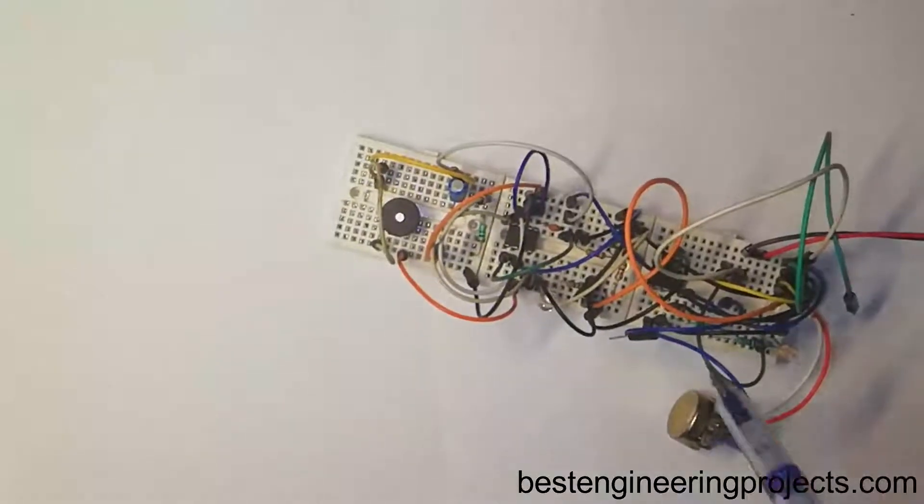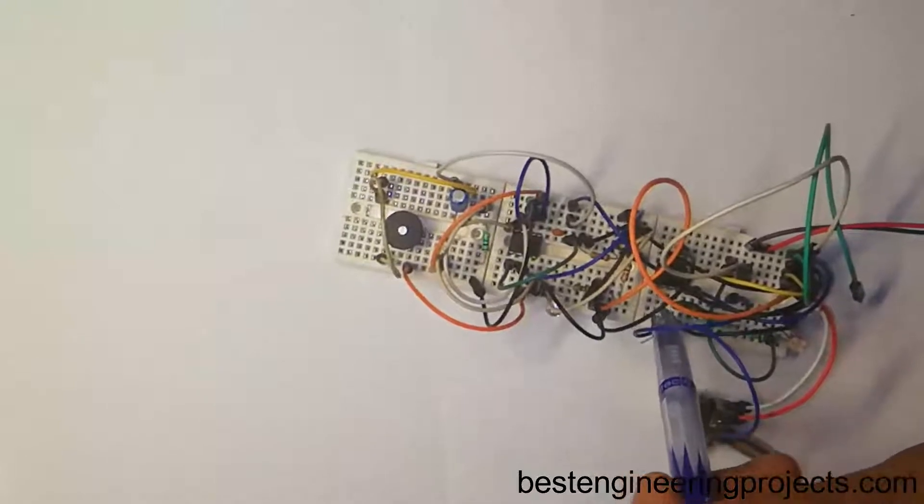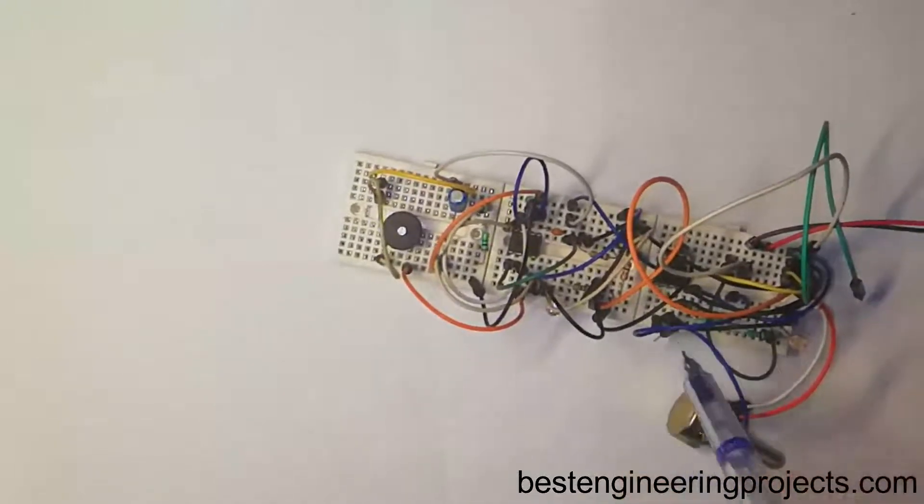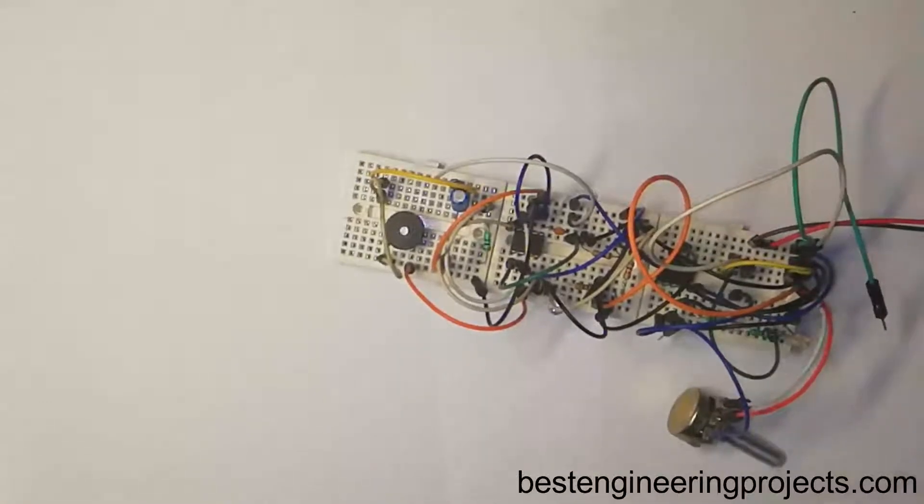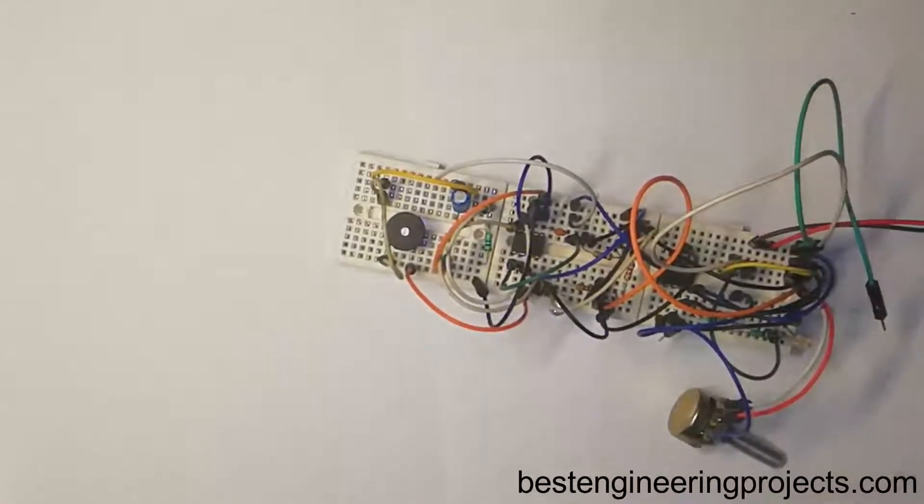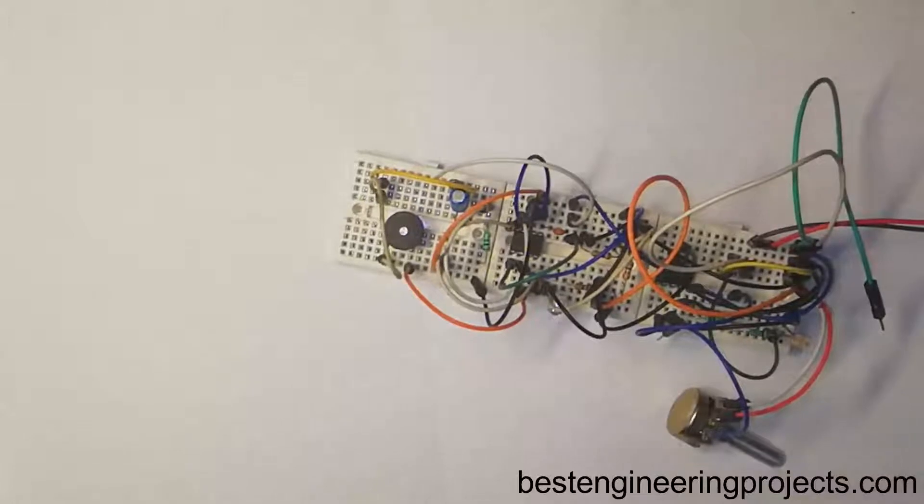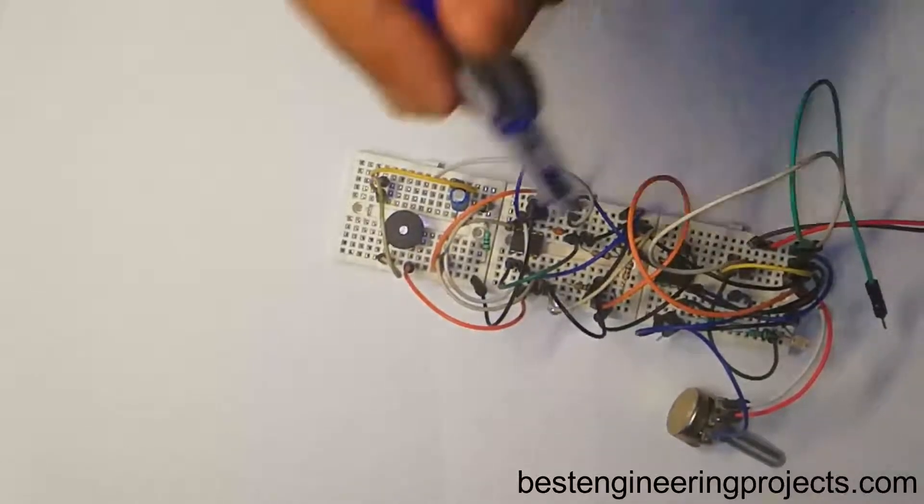IC 741 is configured in voltage comparator mode where these two resistors R1 and R2 form a voltage divider which provides reference voltage. LDR with variable resistor RV1 is also a voltage divider and provides signal voltage.